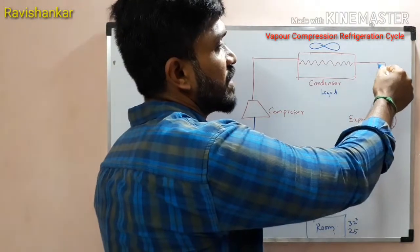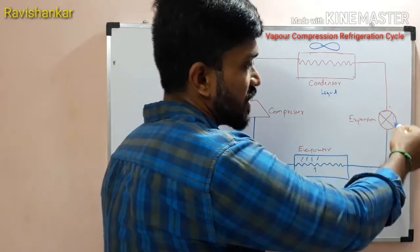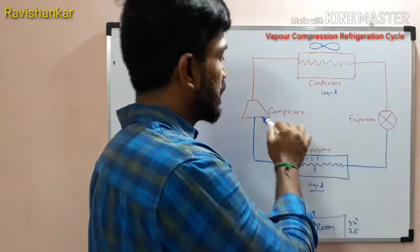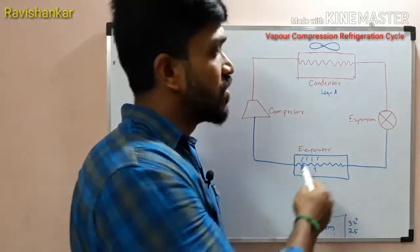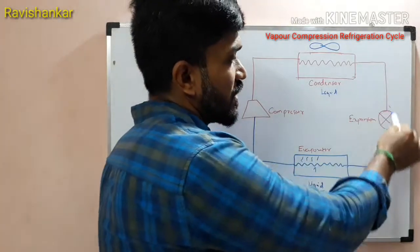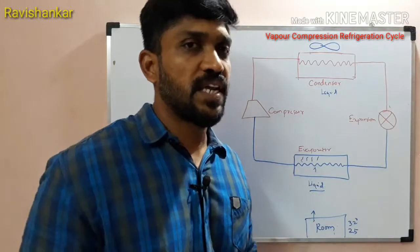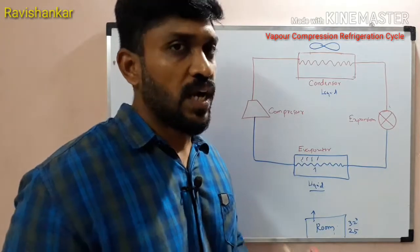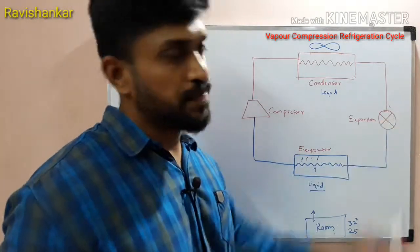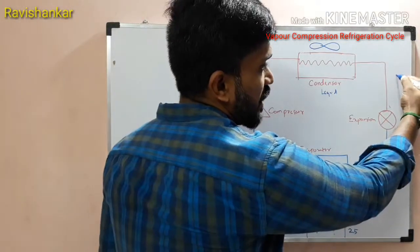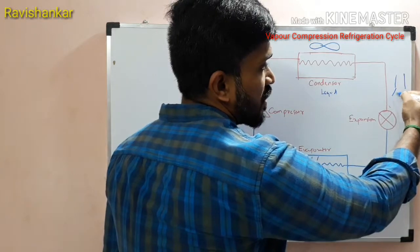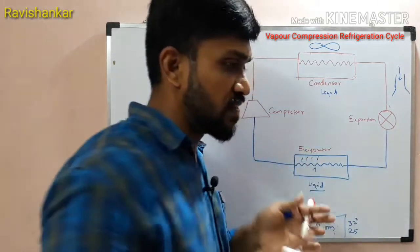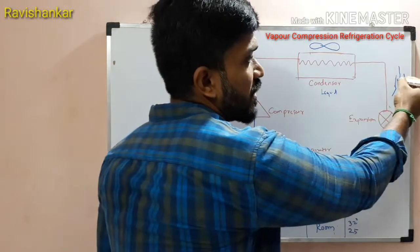Now we will put the liquid into the expansion device. In this expansion device, I will continue to cycle this. In the expansion device, there is high-pressure liquid — the high-pressure liquid becomes low-pressure. That's why we are using this expansion device. There is a restriction in this pipe — you can see the pressure drop all the way down.